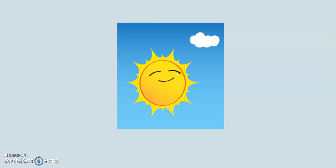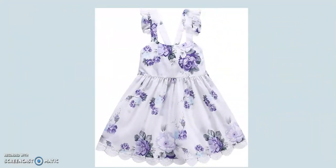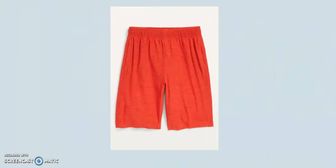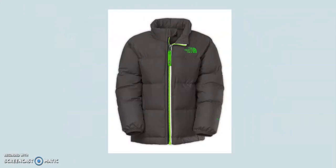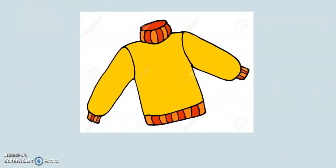What do you see? The sun. What do you see? The sun. What do you see? A cloth. What do you see? I see a dress. What is it? It's a dress. What do you see? I see shorts. What are they? They are shorts. What do you see? I see a jacket. What is it? It's a jacket. What do you see? Gloves. What are they? They are gloves. What do you see? I see a jumper or a sweater. What is it? It's a jumper or a sweater.